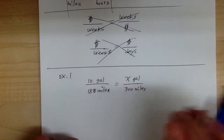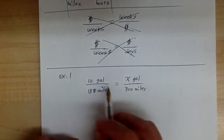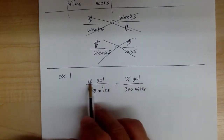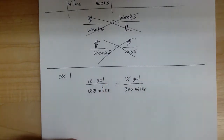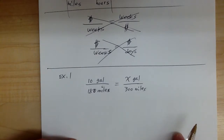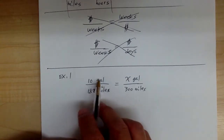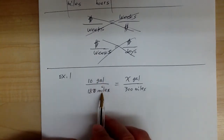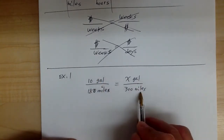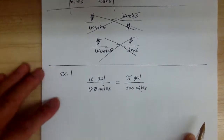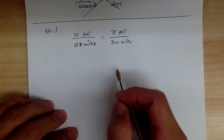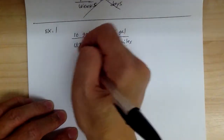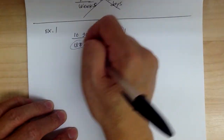It's very easy with the proportion. As long as you line up your labels, then you know it's correct. So if you're gallon over miles, then you have gallon over miles — and that's all you have to do. Next, just go and solve. We already did this before — just go and cross-multiply.